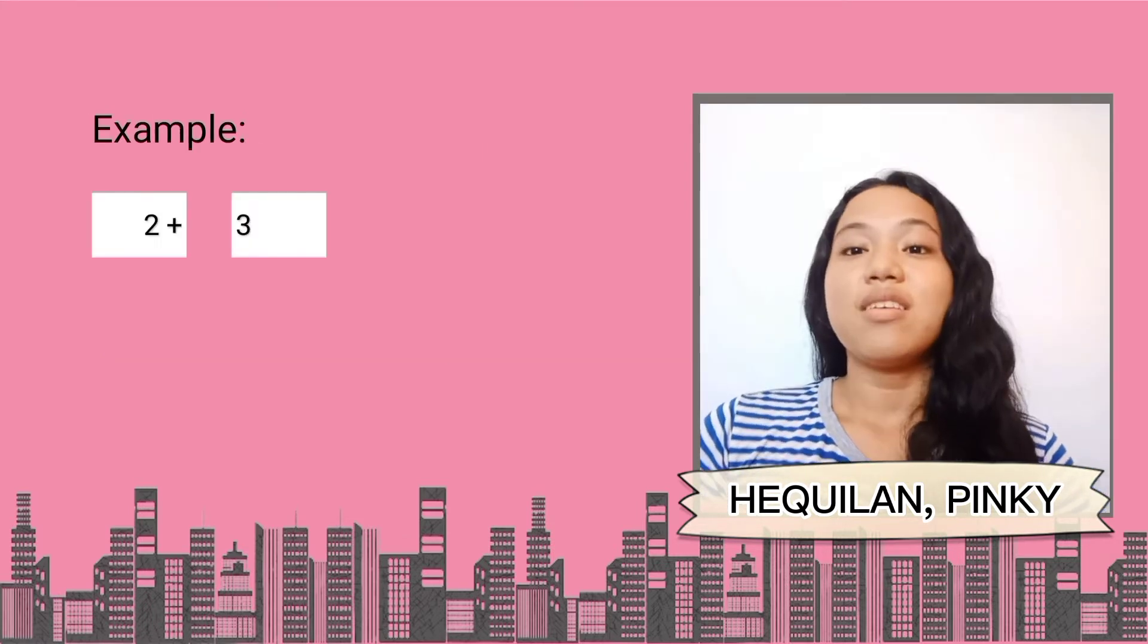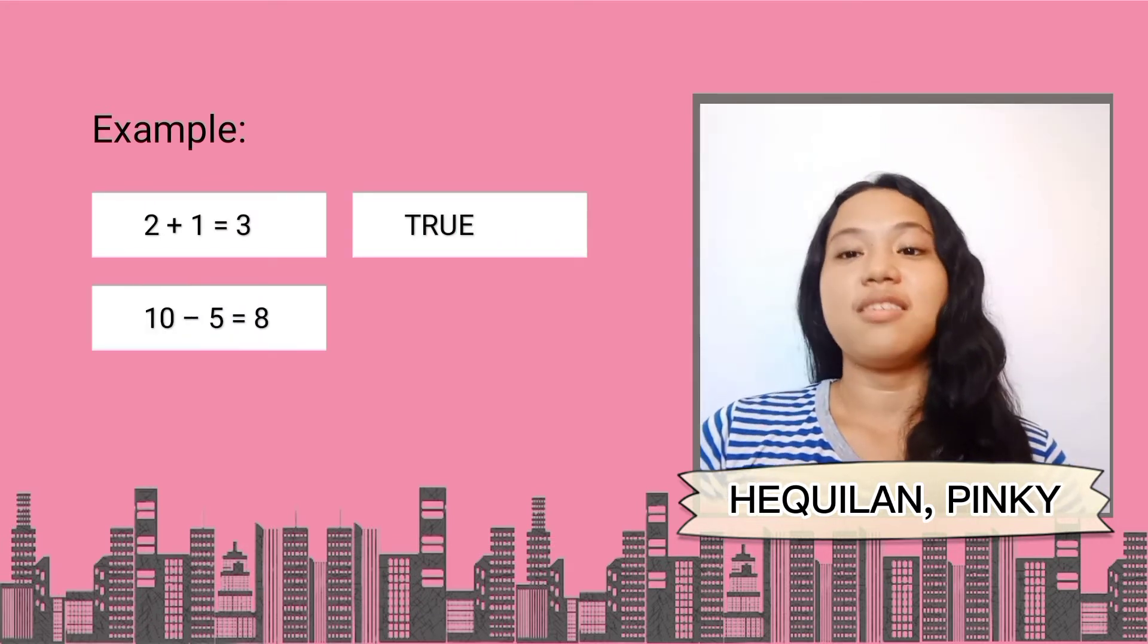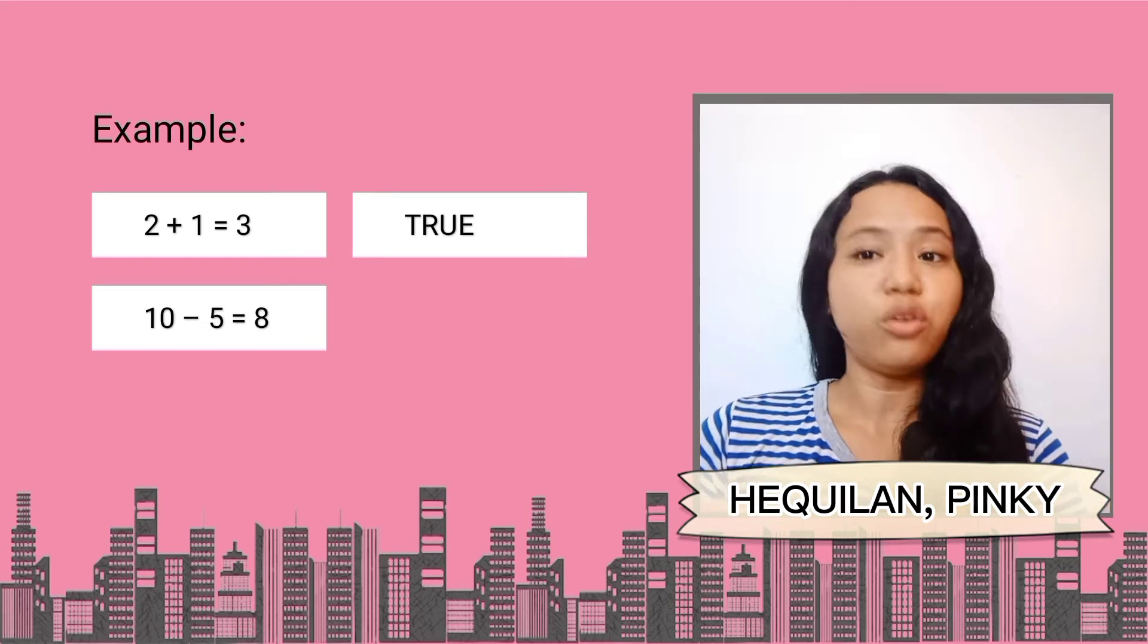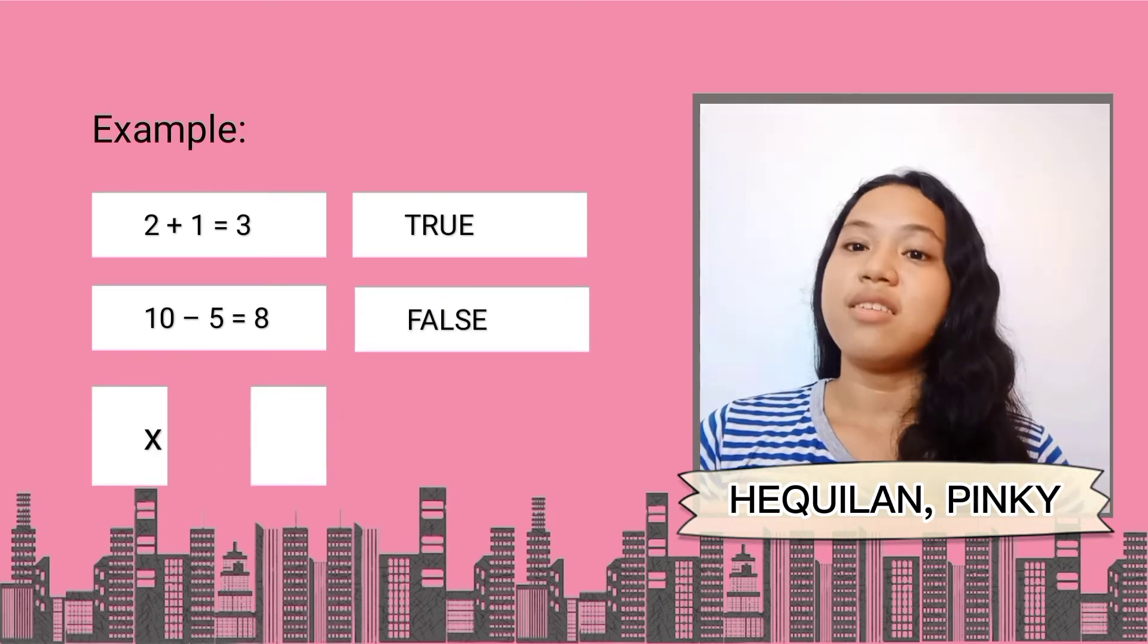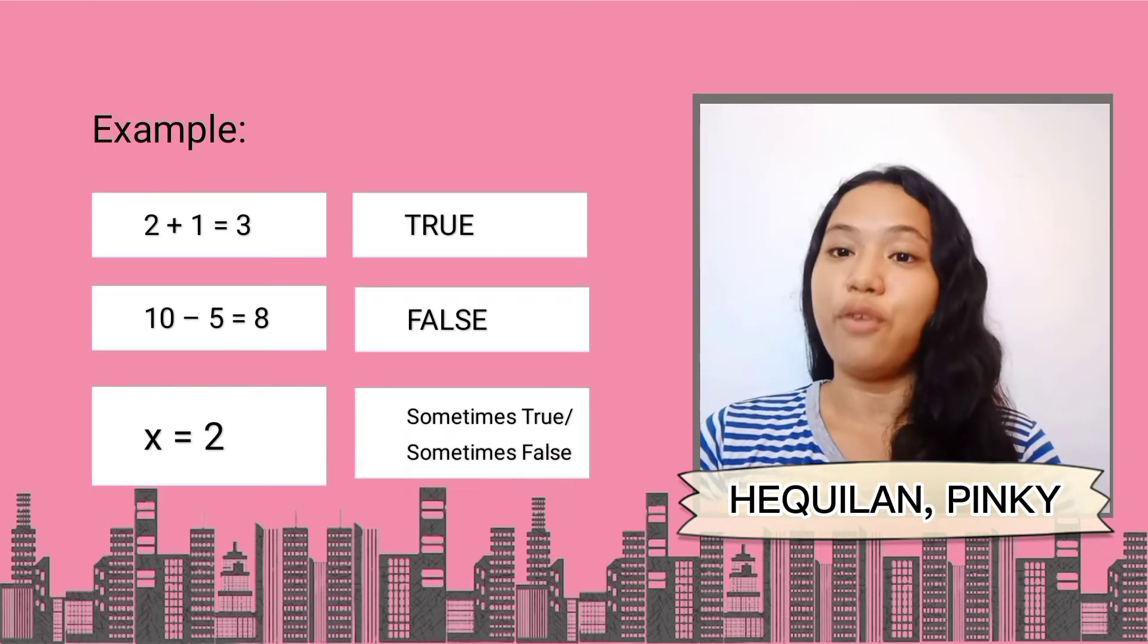Examples. The sentence 2 plus 1 is equal to 3 is true. The sentence 10 minus 5 is equal to 8 is false. The sentence x is equal to 2 is sometimes true or sometimes false.